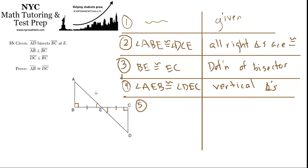And now we have enough to prove the triangles congruent, so let's go after those triangles. Triangle ABE is congruent to triangle DCE. And that's by ASA, angle side angle.